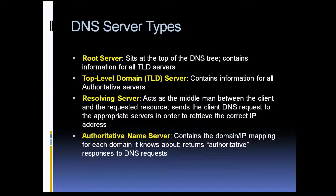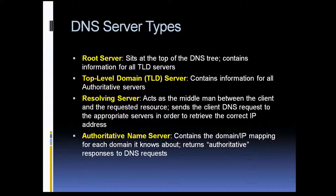In addition to those terms, here's a quick overview of some of the servers you'll come across when working with DNS. The root server sits at the top of the DNS tree and contains the information for all of the top-level domain servers. The top-level domain servers contain information for all of the registered domains and the authoritative servers associated with them. A resolving server acts as a middleman between the client and the requested resource. The authoritative name server is the server that contains the actual domain and IP mappings for a specific domain, and it's called authoritative because it returns an authoritative response to DNS requests.